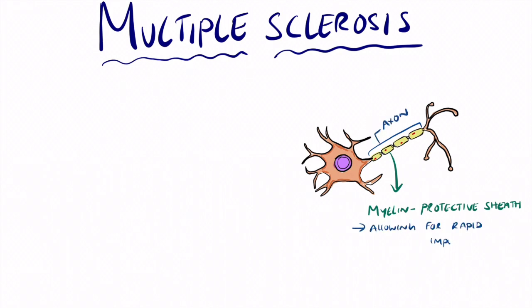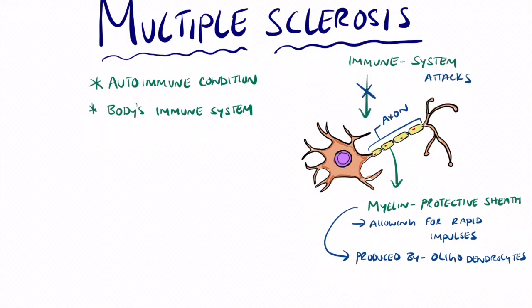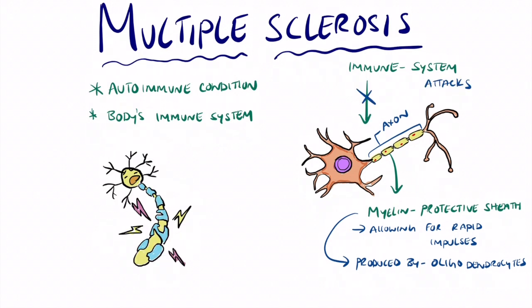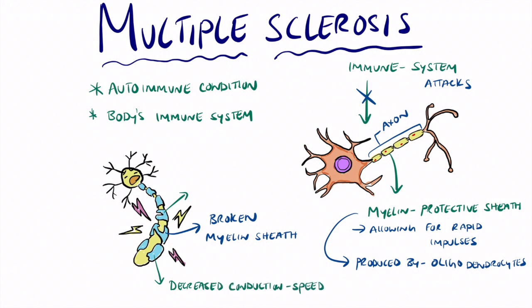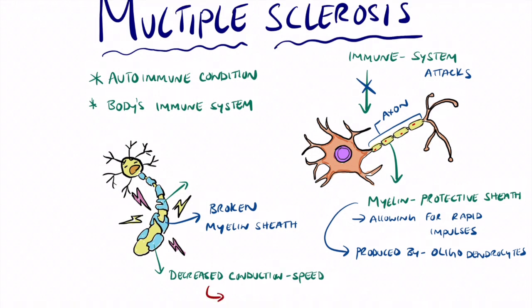The oligodendrocytes are the cells within the CNS responsible for the production of the myelin sheath. When they break down, they cause rapid destruction of myelin. In this autoimmune condition, the body's immune system attacks the myelin, leading to a decrease in conduction speed, which results in sensory defects including sensory, motor, and cognitive problems.